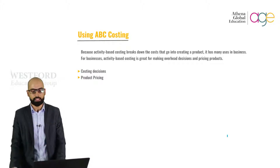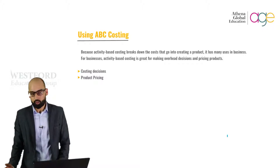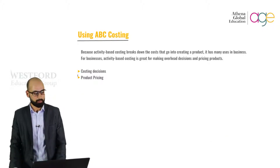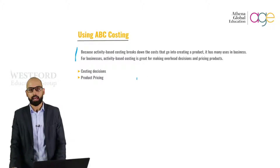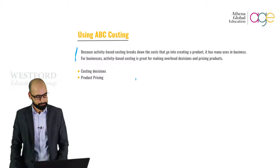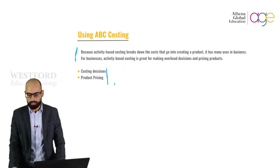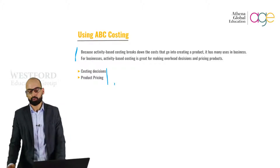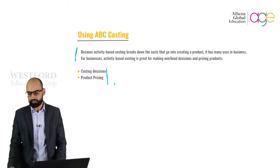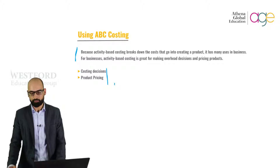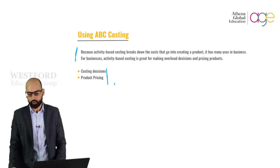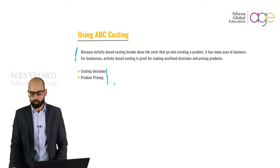Activity-based costing breaks down the costs that go into creating a product and has many uses in business. For example, ABC costing is great for making overhead decisions. The ABC system shows you how overhead is used, which helps an organization determine whether certain activities are necessary in production or not. If some activities cost more than they should, you can find new methods or cut down steps immediately.